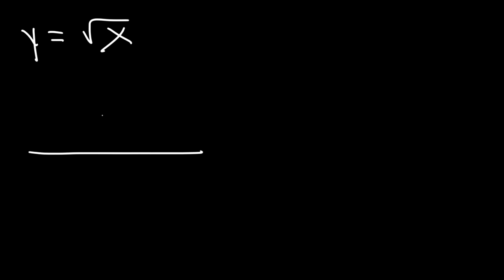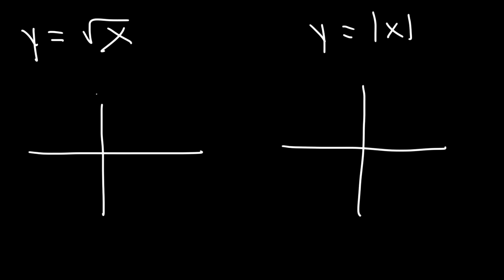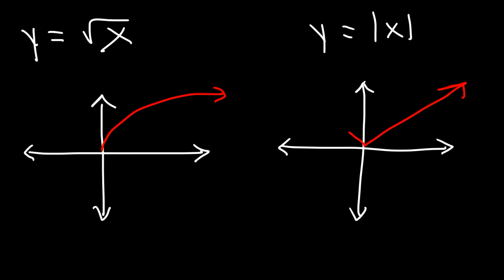Now what about the square root of x and the absolute value of x? Go ahead and try those two — determine if they are functions or not. The square root of x looks like a half-curve, and the absolute value function is like a V-shape. Both pass the vertical line test, so they both represent functions.